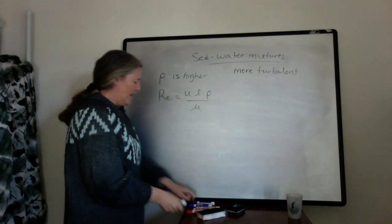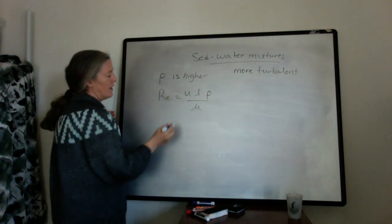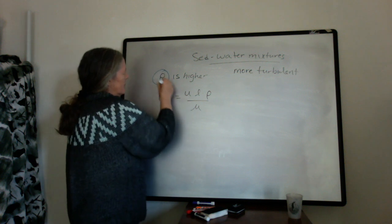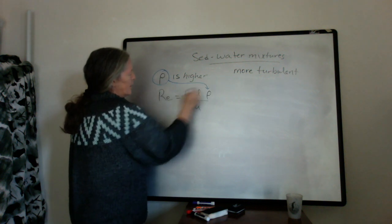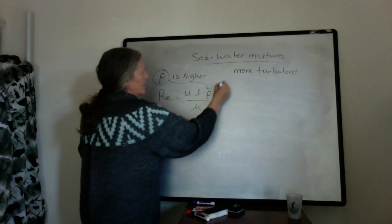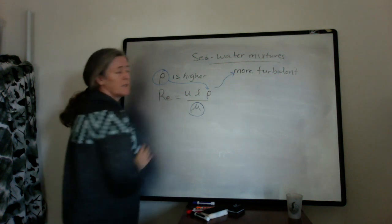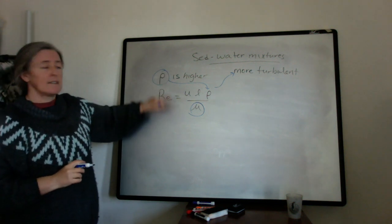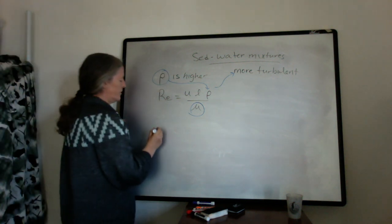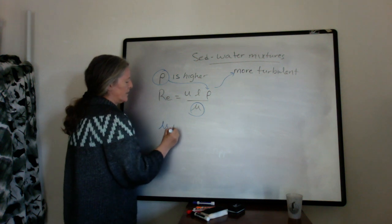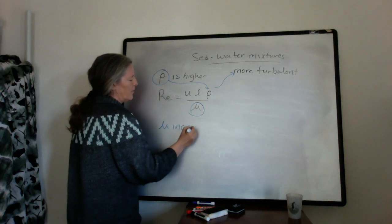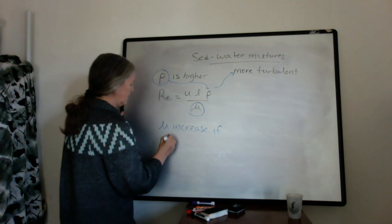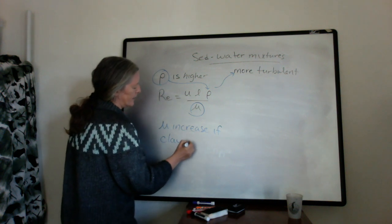However, we can also have changes in viscosity. So this density makes the Reynolds number higher and more turbulent, but sometimes the viscosity of the fluid increases if you mix sediment and water. So the viscosity increases if there are a lot of clay minerals and clay grain sizes.